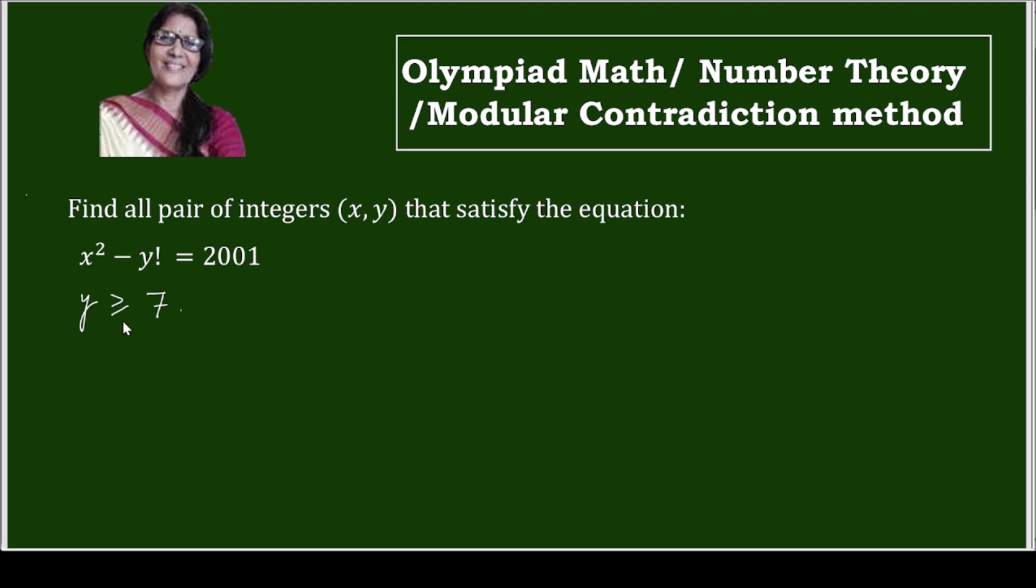Now when y is equals to 7 or it is greater than 7, both the times we are getting that y factorial equals to 0 modulo 7.